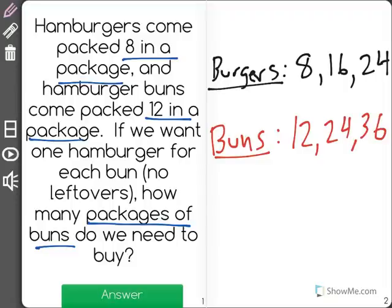Now, it says that we want one hamburger per bun. So let's think about this. We have 24. Okay, so in order to have one hamburger for each bun, we'd need 24 burgers and 24 buns.